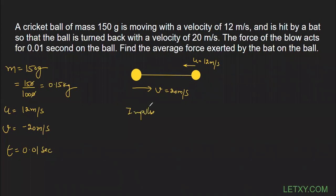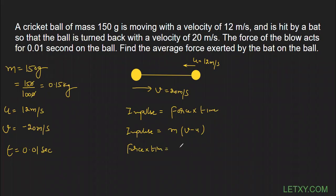Impulse = Force × Time. The problem is we need to calculate the average force — time is given but impulse is not directly given. According to the impulse-momentum theorem, impulse is also written as m(v - u), which is the change in momentum. So: Impulse = Force × Time = m(v - u). Force × 0.01 = m × (v - u), where m = 0.15 kg, v = -20 m/s, and u = 12 m/s.